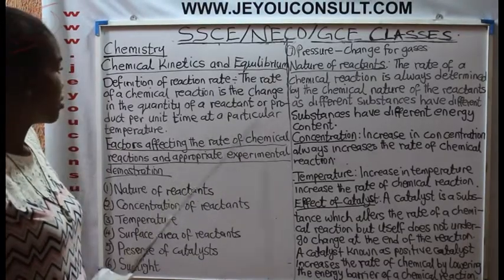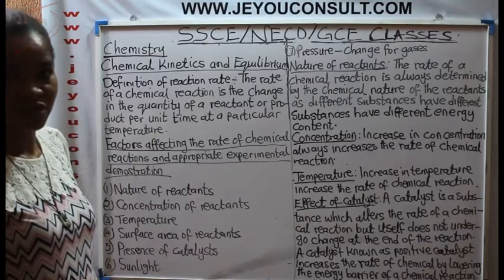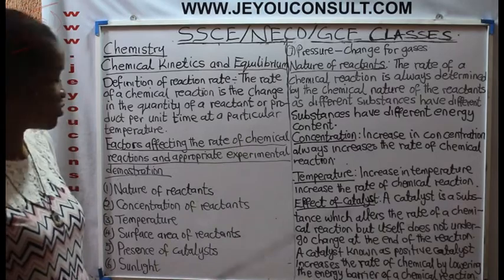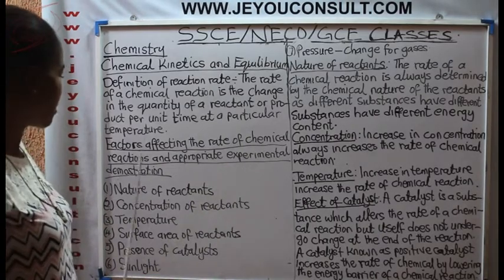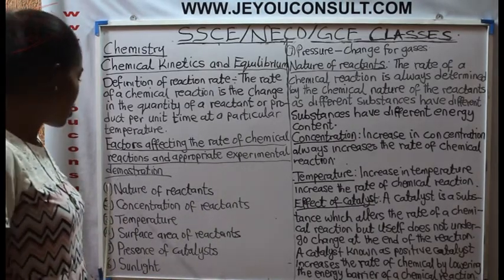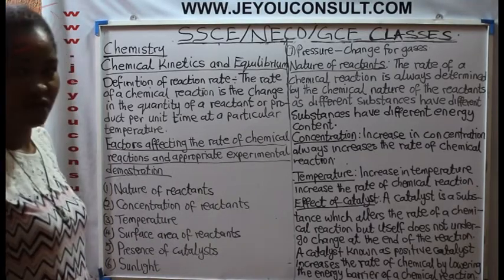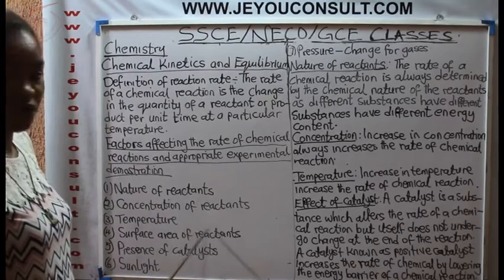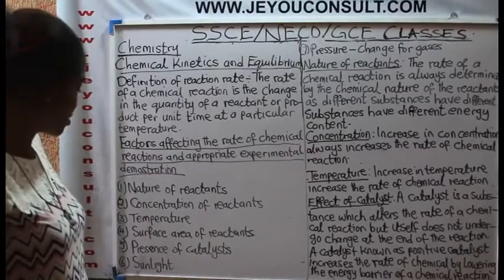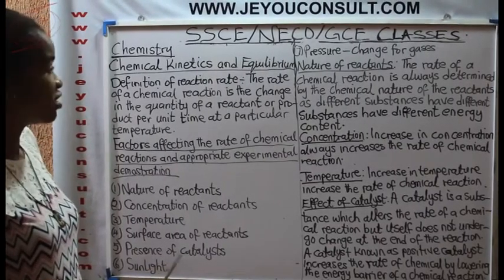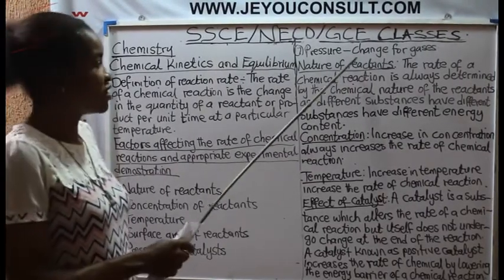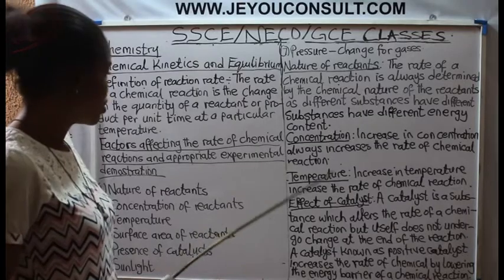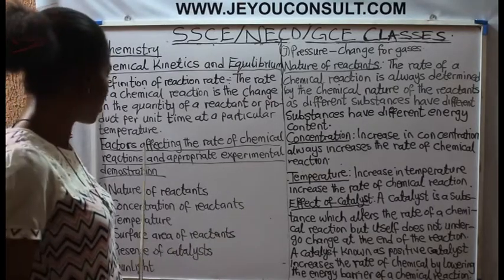There are factors affecting the rate of chemical reactions. Number one factor is nature of the reactant. Concentration of reactant. Temperature. Surface area of reactant. Presence of catalysts. Sunlight. Pressure change for gases. We will now, one after the other, explain all these factors.